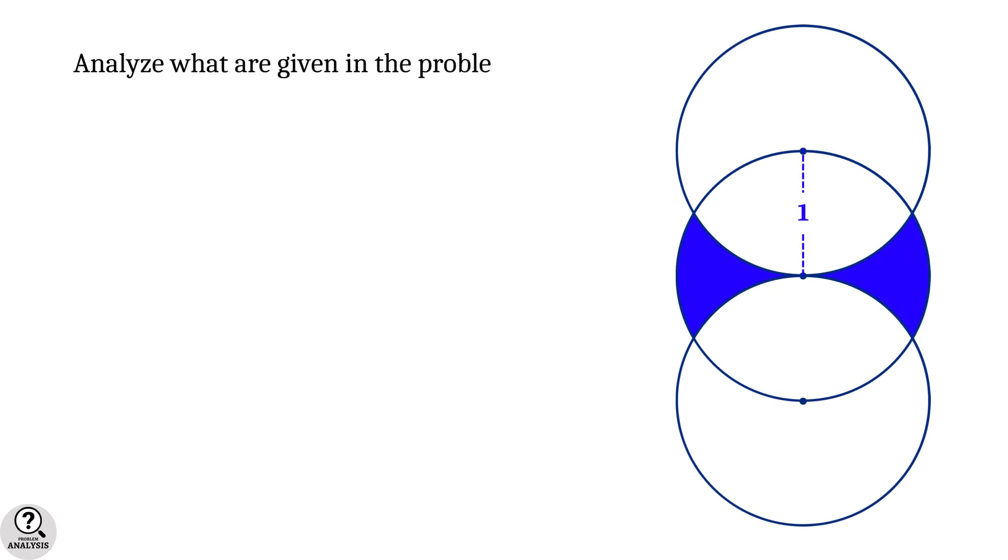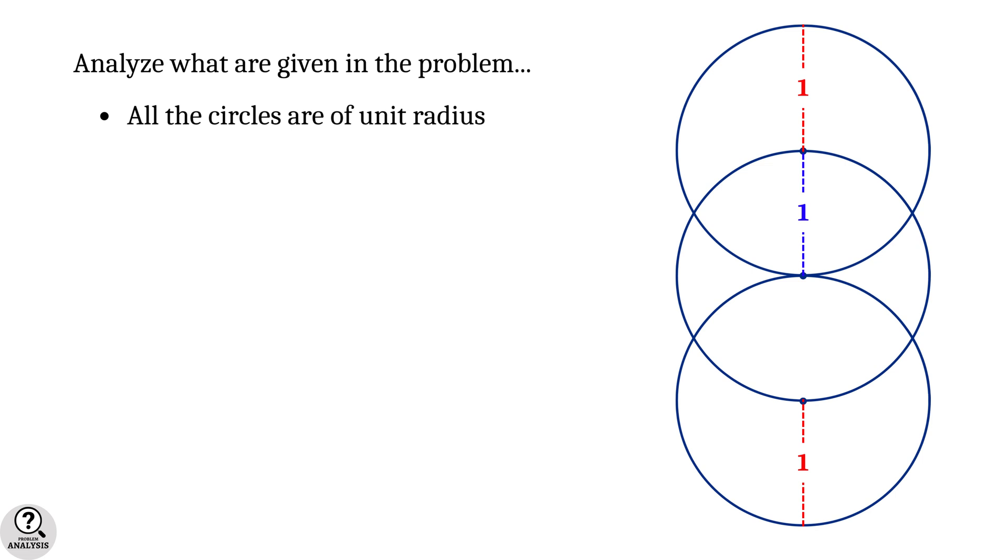First, let's analyze what are given in the problem. First of all, all the circles are of radius 1 unit. And then the centers are collinear.